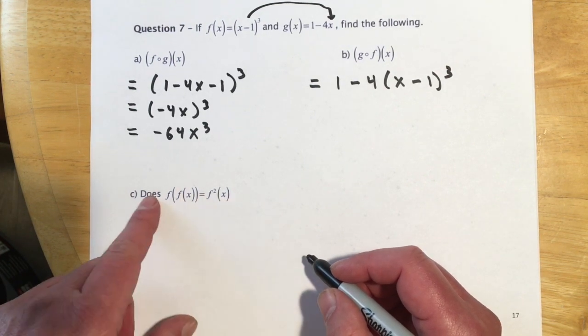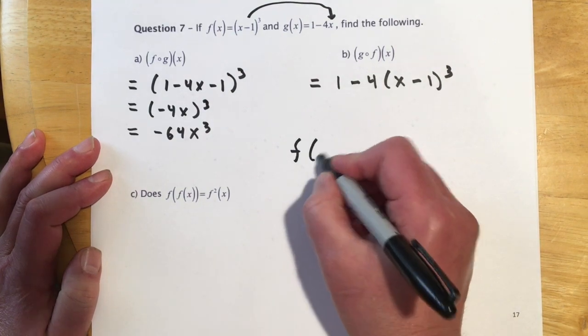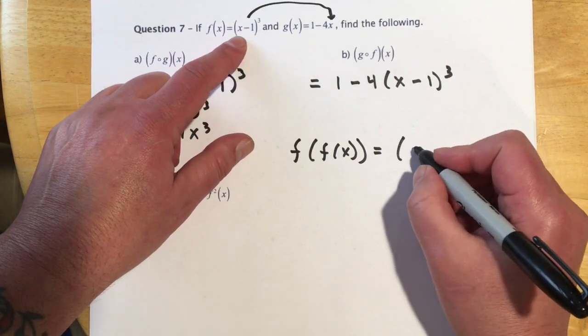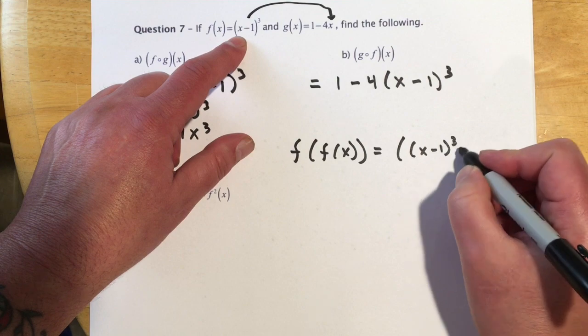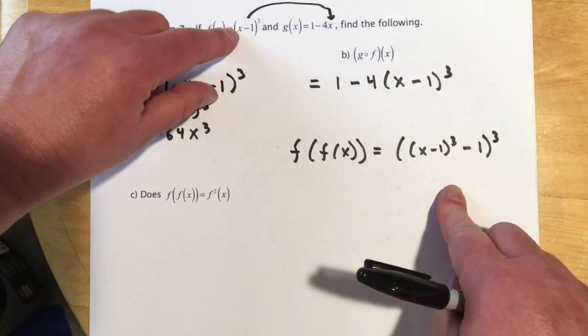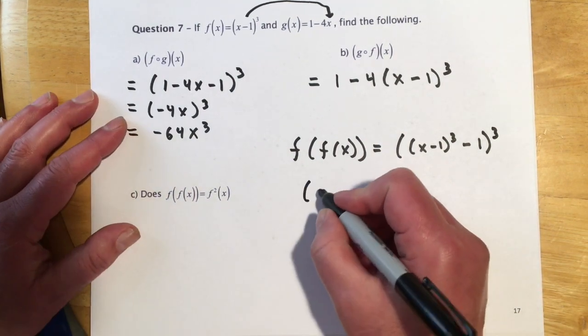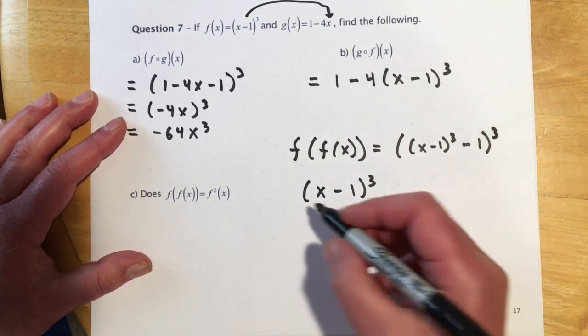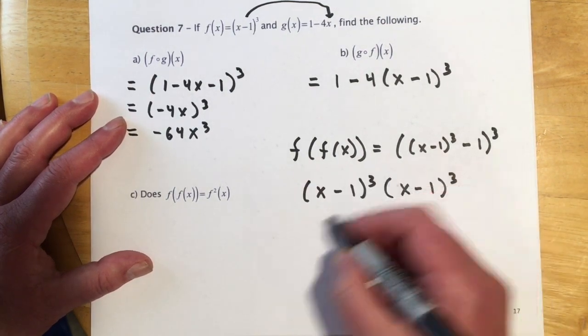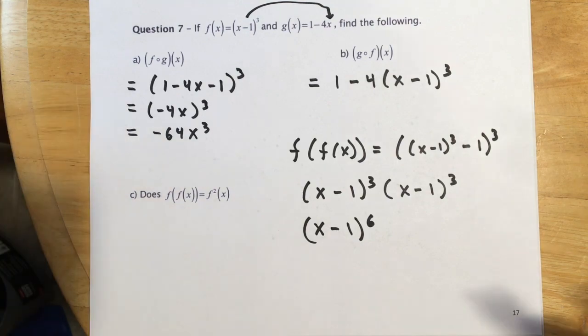And then last question is, does f of f of x equal f squared of x? So to do these, like multiply and become squared. So we'll try one of each and figure it out. So f of f of x would mean f of x is going into itself. So that would be x minus 1 cubed minus 1 cubed. So we're substituting this in for its own x. So that would be f evaluated at f of x. f of x squared, that would be x minus 1 cubed. And then times x minus 1 cubed. So that times that, or you can think of it as squared, would be x minus 1 to the sixth. And so that does not equal that. So they are not equal.